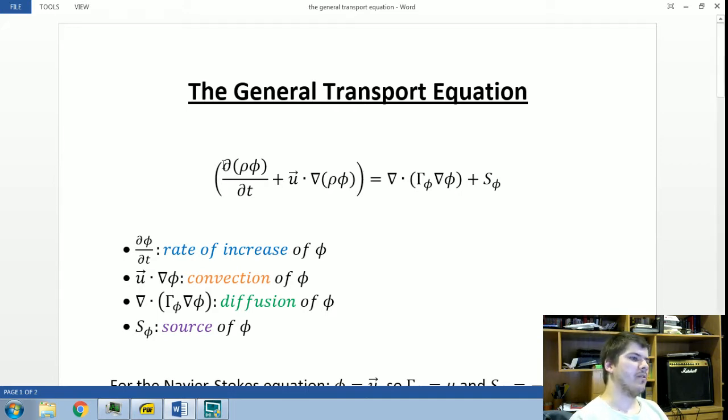This term here is the rate of increase in time of this certain quantity phi. Here is the convection of this variable. You can see here the velocity vector. So, this quantity is being transported by velocity along a certain domain of interest.